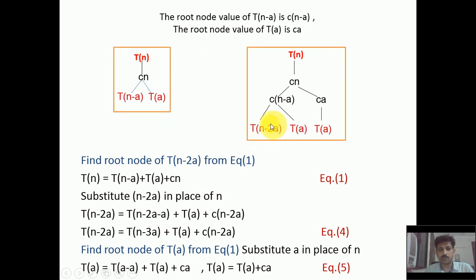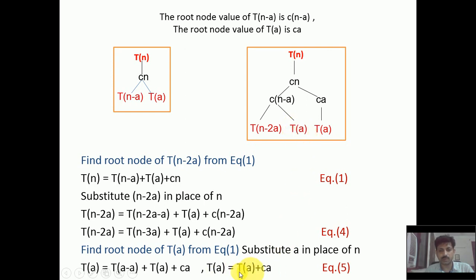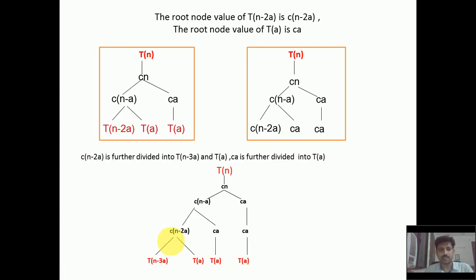To find the root node value of T(n-2a), we place n-2a in place of n in equation one. So T(n-2a) becomes T(n-3a) + T(a) + c(n-2a). The root node value of T(n-2a) is c(n-2a), i.e., cn minus 2ca. We continue dividing the tree further in this pattern.